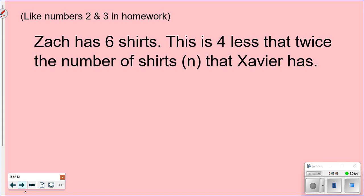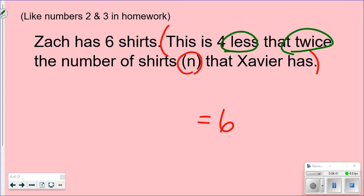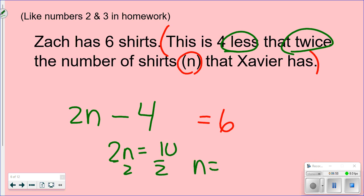Problem: 'Zach has six shirts. This is four less than twice the number of shirts Xavier has. How many shirts does Xavier have?' Six total means that equals 6. We let n be Xavier's shirts. Keywords: 'less' and 'twice.' So twice the number is 2n, and four less than that gives us 2n − 4 = 6. Solving: add 4 to both sides, 2n = 10, divide by 2, n = 5.